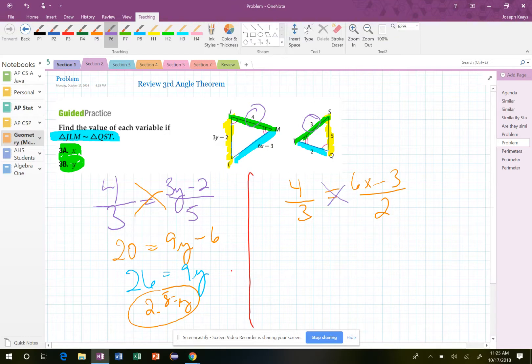And that's going to be proportional to 6X minus 3 all over 2. Once again, we're going to cross-multiply in here. This is going to be 8 equals 18X minus 9.